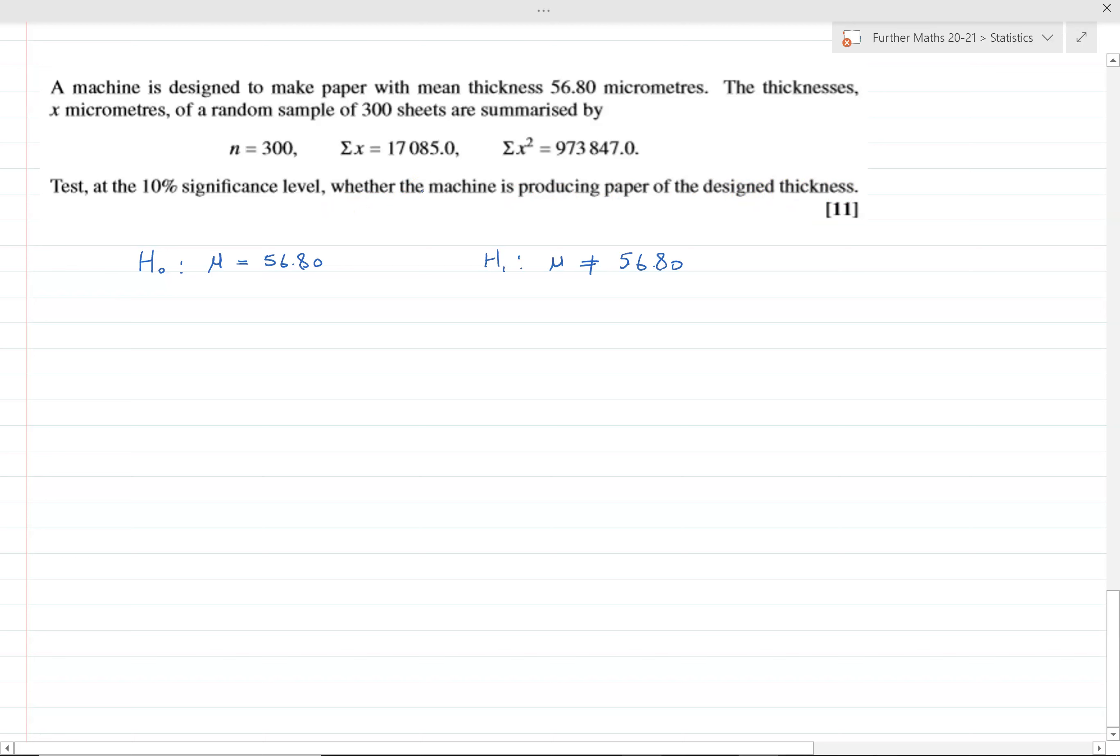Let's define the mean where μ is the mean thickness of paper produced by the machine.